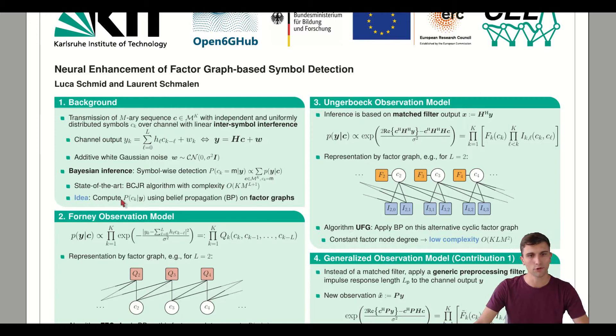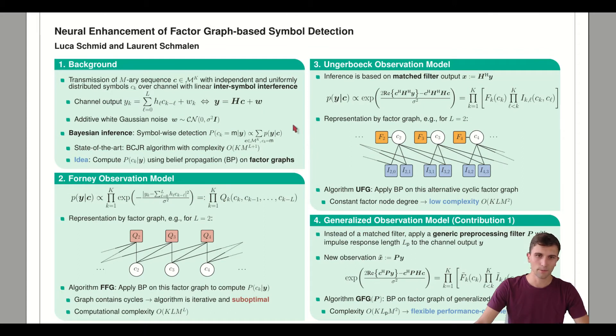Therefore we want to use the framework of factor graphs together with message passing, in this case belief propagation. We need to find an appropriate factorization of this likelihood function.